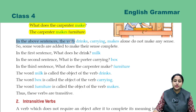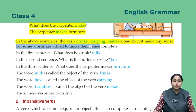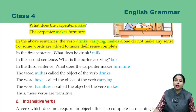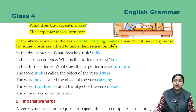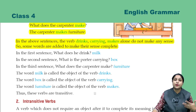In the above sentences, the verbs 'drinks', 'carrying', and 'makes' alone do not make any sense. So some words are added to make their sense complete. 'Drinks', 'carrying', and 'makes' give no sense on their own — some words need to be added to give them proper sense.